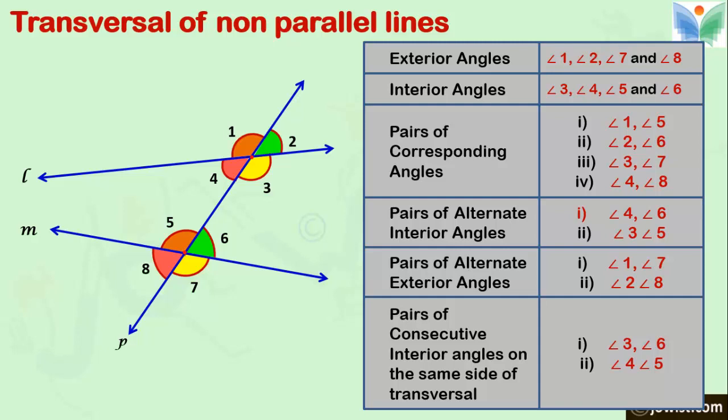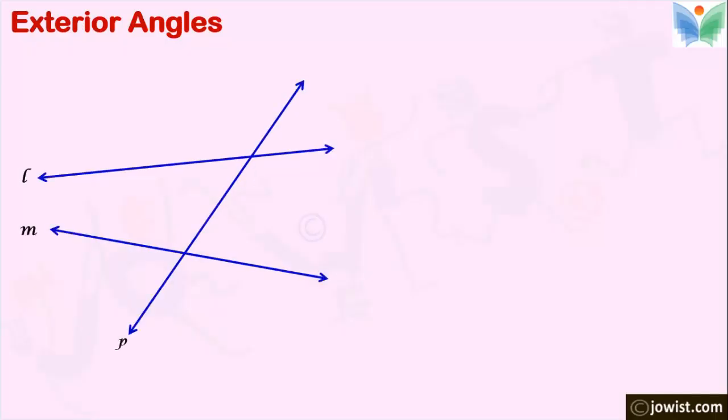Look at this table. I am going to tell you the tricks how to identify these angles. Here are three lines. Two lines L and M and one transversal line P. There are eight angles formed by transversal P and two lines L and M. First of all the names of angles should be written as shown.